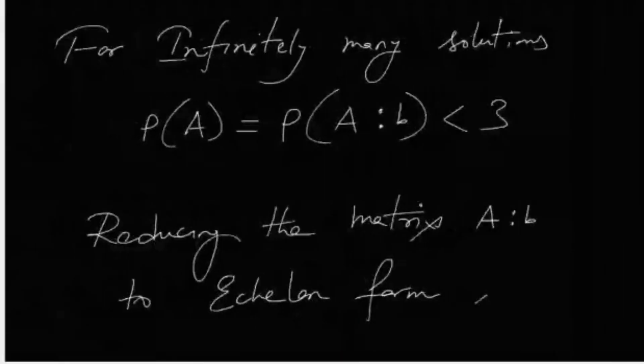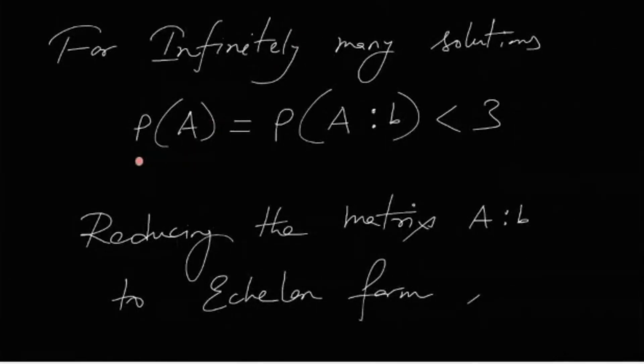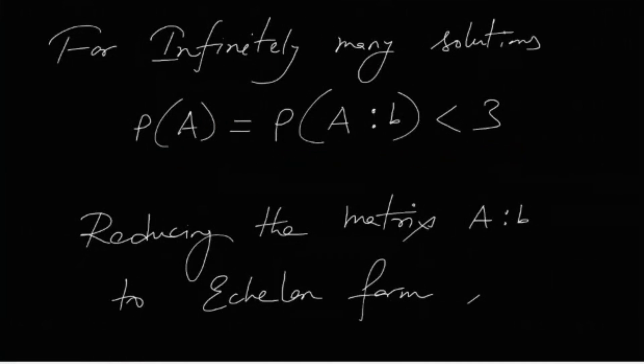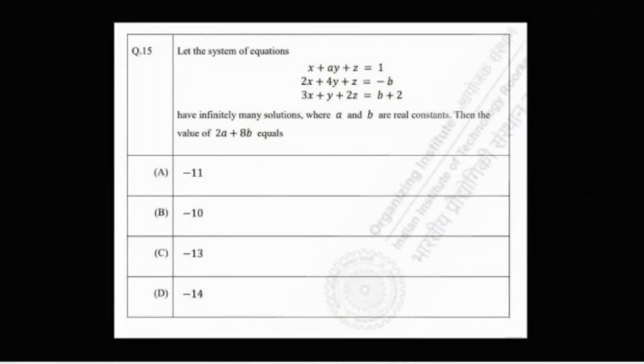It's a very easy problem — we just needed to know the condition for infinitely many solutions: rank(A) = rank([A|b]) < number of columns in the coefficient matrix. That's it. Do like, share, and subscribe to the channel for more exciting problems. See you next time.